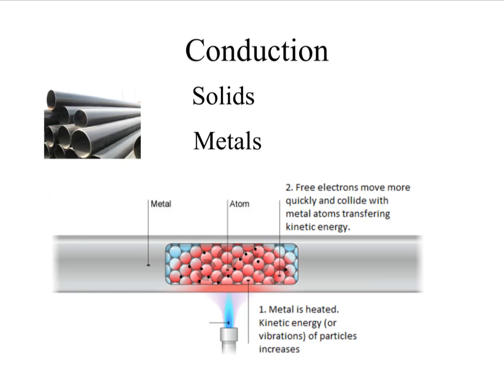The diagram zooms in on this bar of metal and it shows us the particles inside. Now, as the particles are heated by the flame, they gain kinetic energy, their kinetic energy increases, their vibration increases, and their temperature rises. As particles collide with the particles next to them, their vibrational energy or their kinetic energy is passed on.